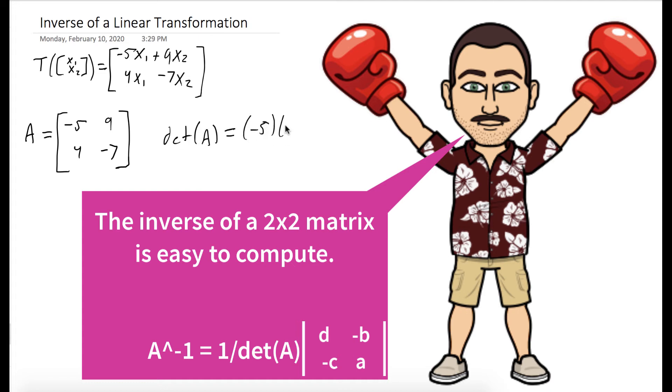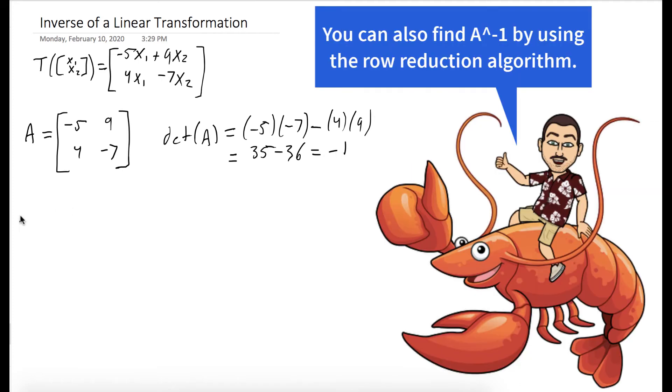And in order to do that, we should first find its determinant, which we computed to be 35 minus 36, which is negative 1. So A inverse is 1 over its determinant times this matrix.